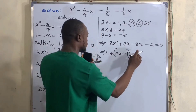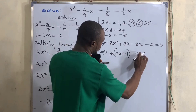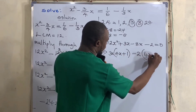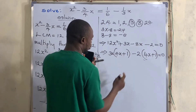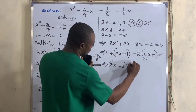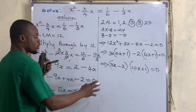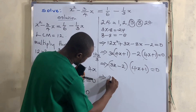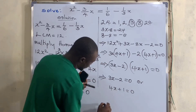Factoring 3x out from the first group gives 4x plus 1. For the second group, minus 8x minus 2, the common factor is 2, giving minus 2 times 4x plus 1. So we bring the outside terms together: we have bracket 3x minus 2 times bracket 4x plus 1 equals 0.